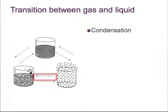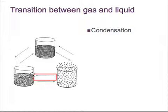Going the reverse way, from a gas to a liquid, is condensation. Think of the morning dew, or a cold glass sitting out on a hot day — the water from the atmosphere will condense onto it because it's actually lowering its energy and reverting back to the liquid.